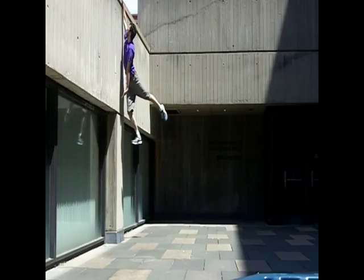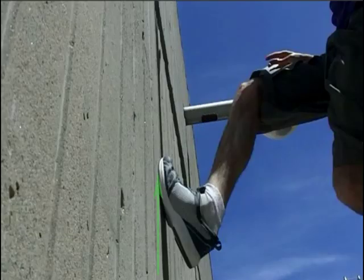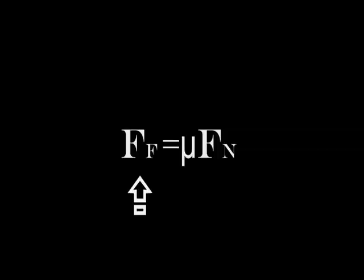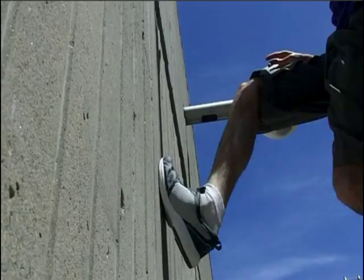We jump to the interaction with the wall. When your foot hits the wall, two primary forces come into play: the frictional force, which attempts to keep your foot from sliding downward, and the normal force, which is best described as the wall resisting the push of your foot, holding you back from going through it. The frictional force is dependent on the normal force and the coefficient of friction, represented by the Greek letter mu. The coefficient of friction is what you probably refer to as the grip of the wall or shoes, and is between 0 and 1.